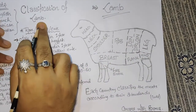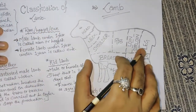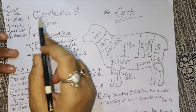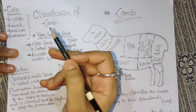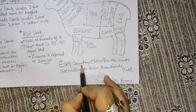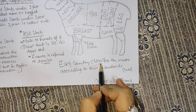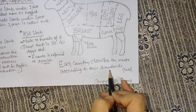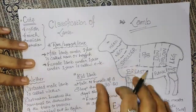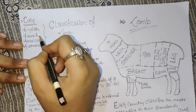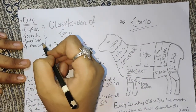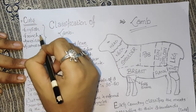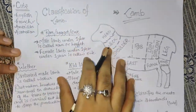This classification of lamb — I am going to tell you something important today. Watch this video till the end. It has some international cuts. Each country classifies the meats according to their own standards, so their cuts are different. There are English cuts, French cuts, and American cuts. We will focus more on French cuts.